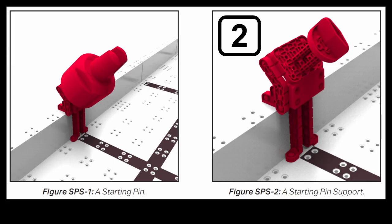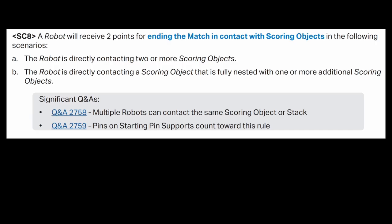Okay, there's only two more ways to earn points. There are four starting pin supports on the field that each start the match with a pin on them. You get two points for every starting pin removed from a starting pin support. Lastly, if your robot finishes the match touching at least two scoring objects, you'll get an extra two points. You can be touching two scoring objects, or touching one object that's fully nested with another object. They should call that the transitive property of scoring objects.